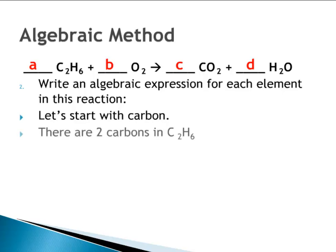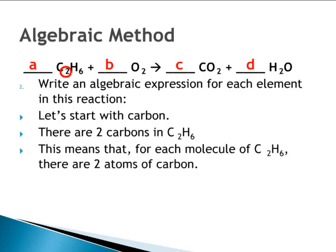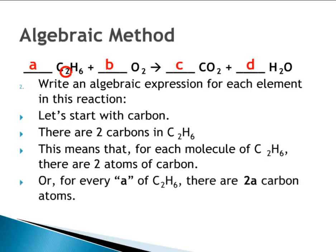Let's start with carbon. Notice that there are two carbons in C2H6. That means that for every molecule of C2H6, there are two atoms of carbon. Or for every A of C2H6, there are two A carbon atoms. If there's one C2H6, there are two carbon atoms; if there are two C2H6s, there are four carbon atoms.